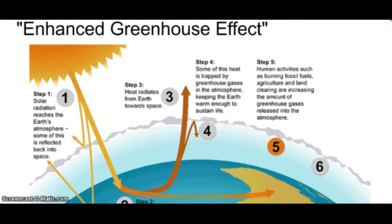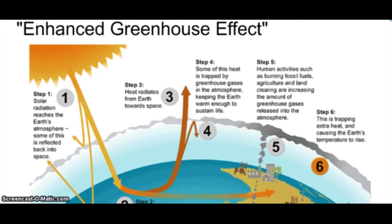Step 5, human activities such as burning fossil fuels, agriculture, and land clearing are increasing the amount of greenhouse gases released into the atmosphere. This is trapping extra heat, causing the Earth's temperature to rise. This is the basic overview of the enhanced greenhouse effect.